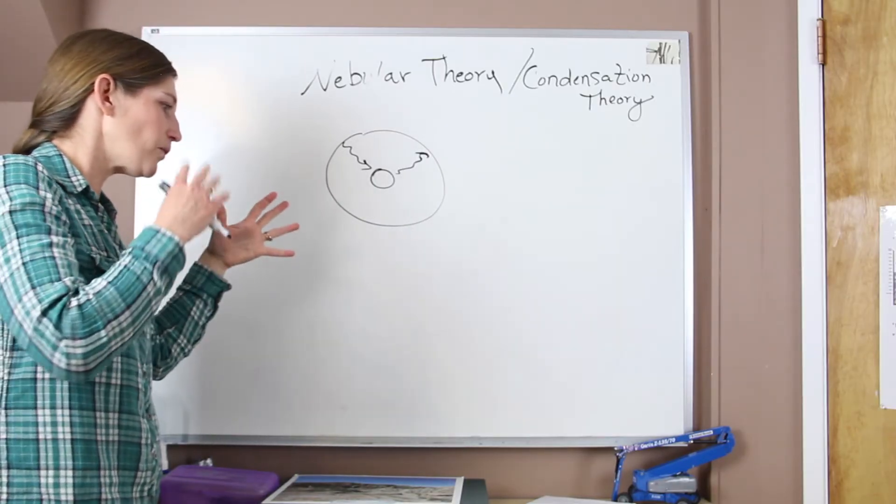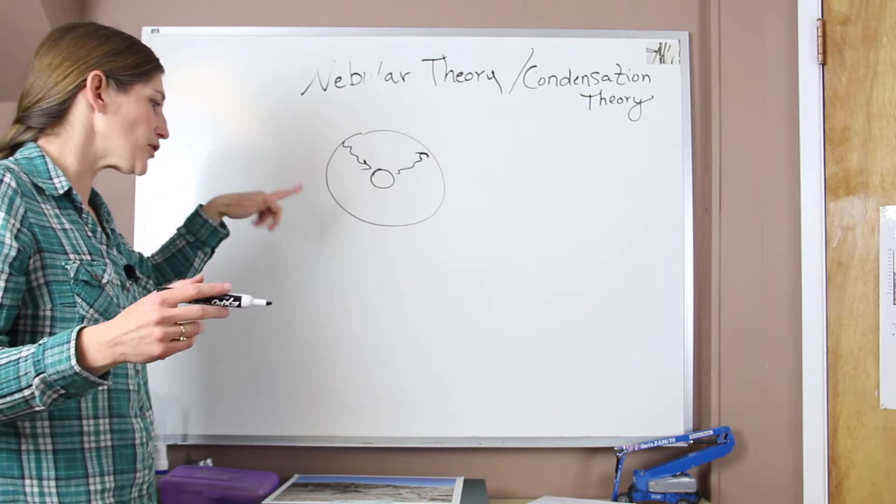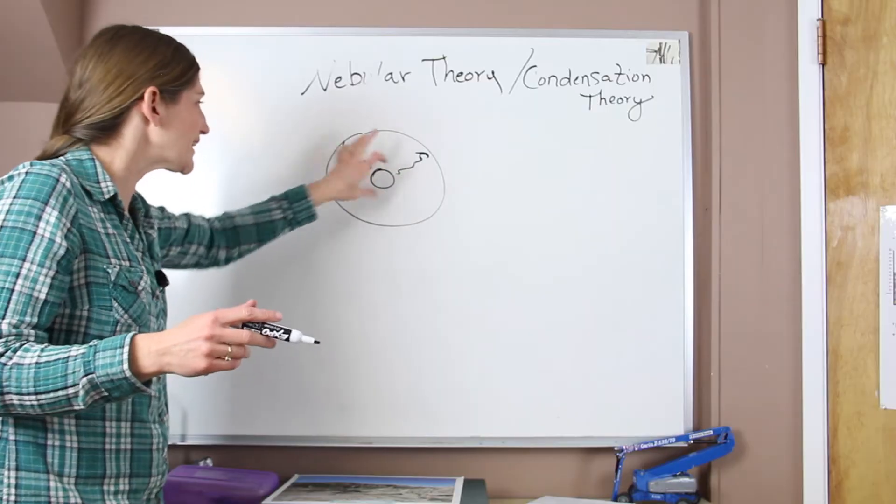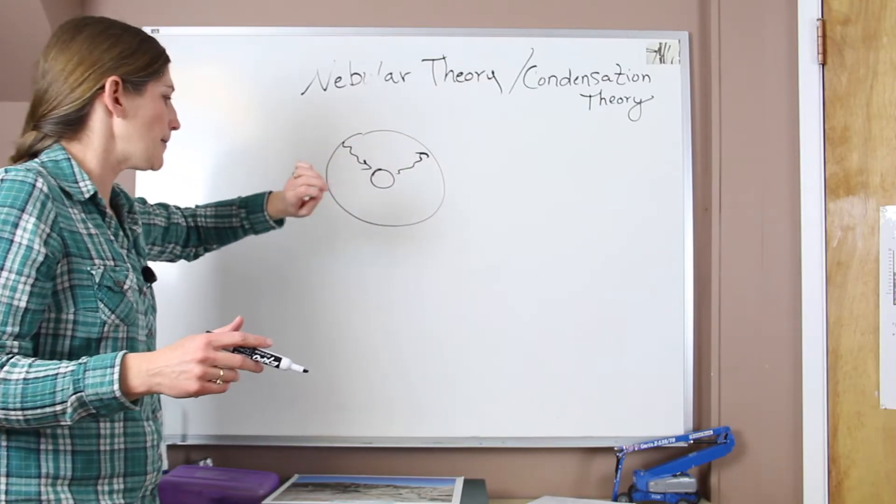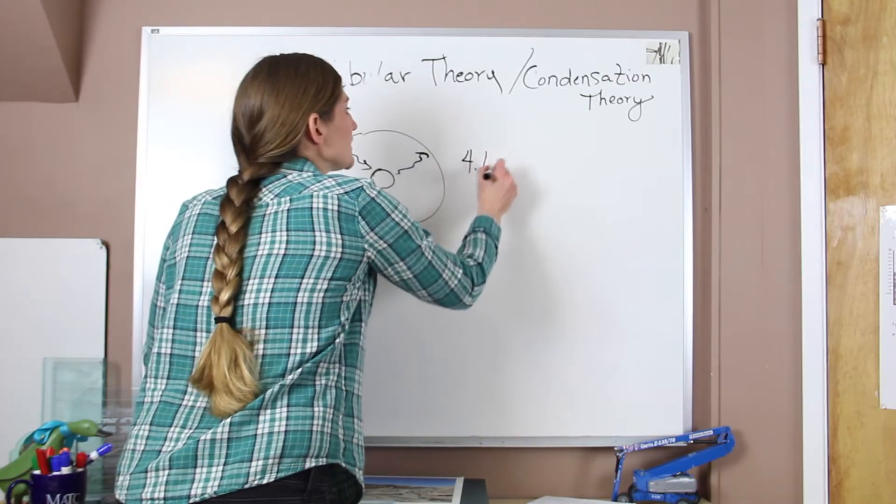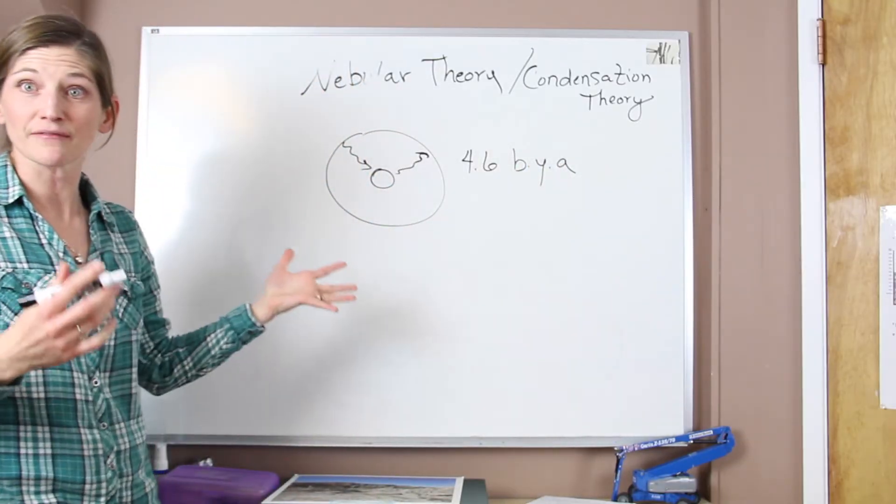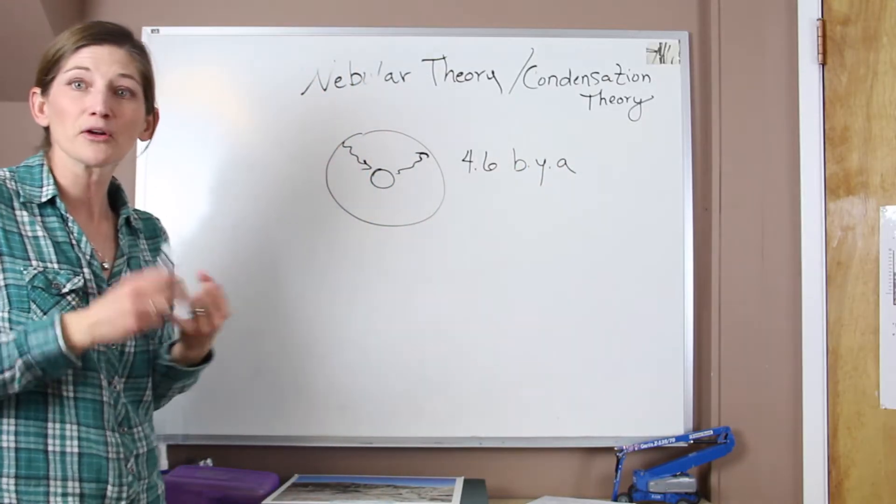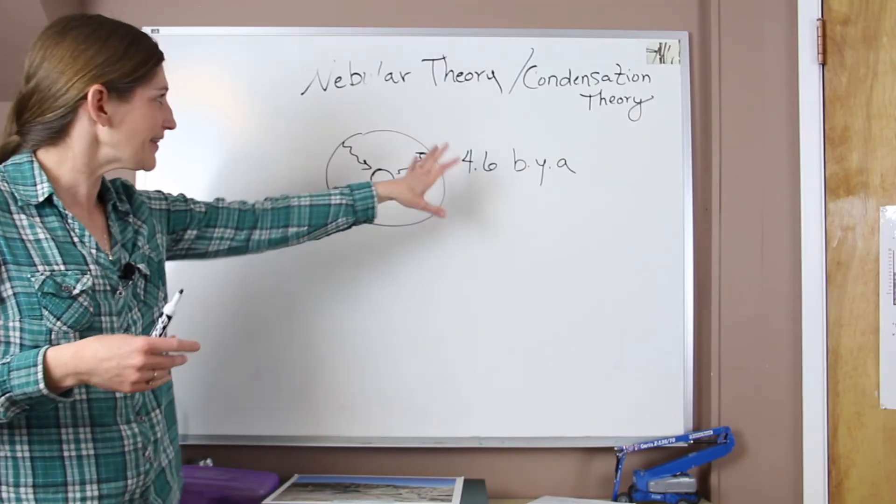Now when we think about what leads to the next step with our earth. So it started out, we get this internal stratification. It's very, very hot. The first surface on our earth starts to cool about 4.6 billion years ago. Okay, that's the accepted age of the earth.